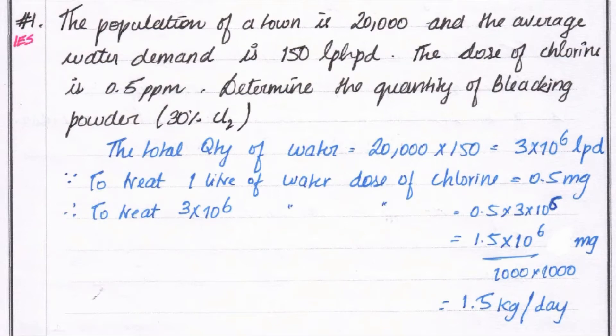Hello friends, welcome to Civil Engineering Exam. Today we are going to see a problem related to wastewater engineering. The problem: the population of a town is 20,000 and the average water demand is 150 lpcd (liters per capita per day). The dose of chlorine is 0.5 ppm. Determine the quantity of bleaching powder required to treat the water. The bleaching powder contains 30% Cl₂ (chlorine).